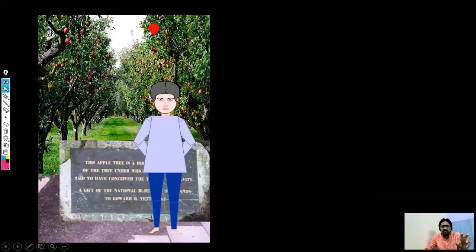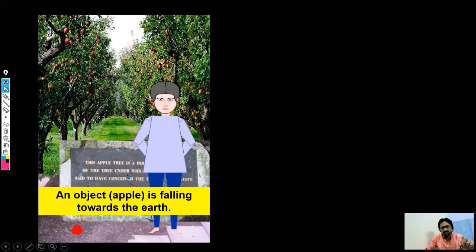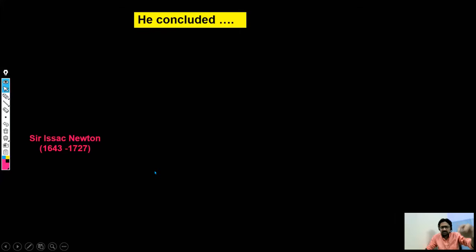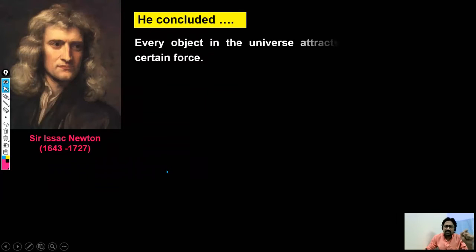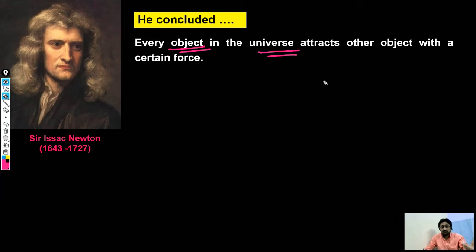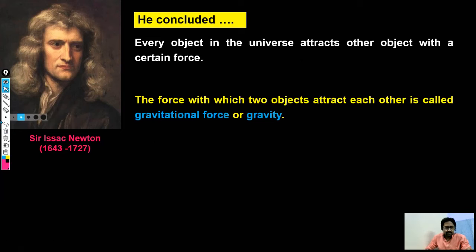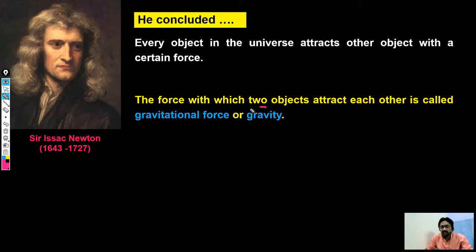Sir Isaac Newton observed that every object is moving towards the center of the earth and started thinking about why this is happening. He reached the conclusion that every object in this universe attracts every other object with a certain force, and this certain force we call gravitational force. This force is attractive in nature. Specifically in the case of earth, we call this force gravity.